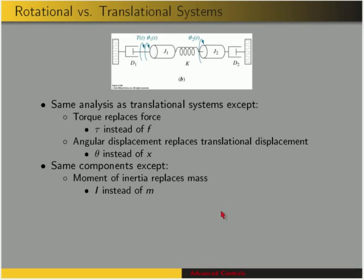We have the same components — a spring, a damper — except moment of inertia now replaces mass, so we're going to have I instead of m. So our S-squared impedance is going to be inertia instead of mass.